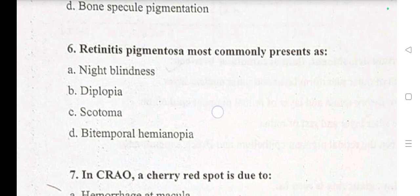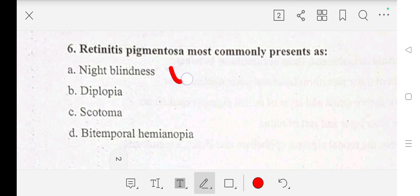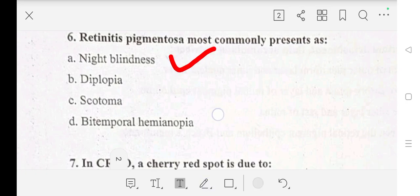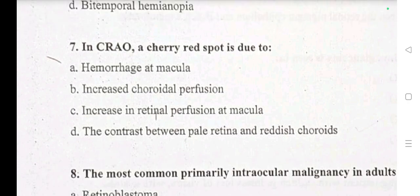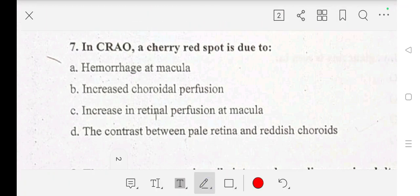Our answer is A: night blindness. Question number 7: in CRAO, a cherry red spot is due to — A: hemorrhage at macula, B: increased choroidal perfusion, C: increase in retinal perfusion at macula, D: the contrast between pale retina and reddish choroid.